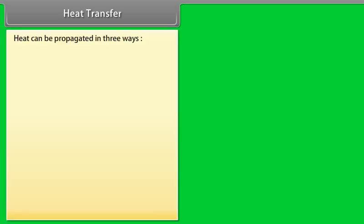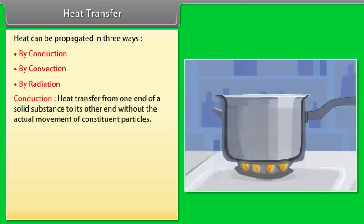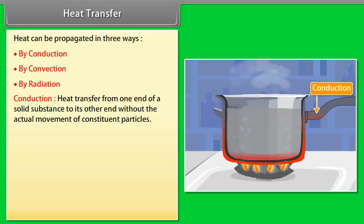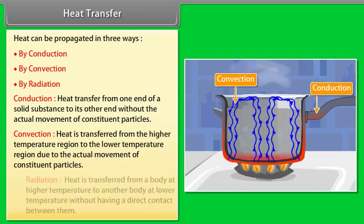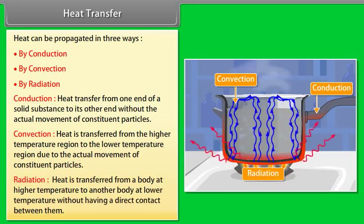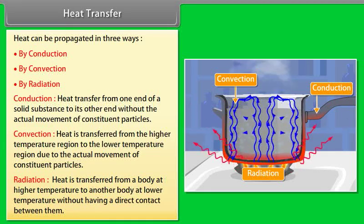Heat transfer: Heat can be propagated in three ways. (1) Conduction: heat transfer from one end of a solid to the other without actual movement of constituent particles. (2) Convection: heat is transferred from higher temperature to lower temperature regions due to actual movement of constituent particles. (3) Radiation: heat is transferred from a body at high temperature to another at lower temperature without direct contact between them.